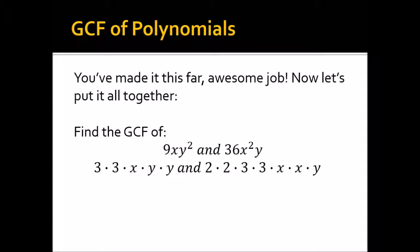I'm thinking they have a 3, they have an x, and a y. So, oh, and another 3. Sorry. So they have 3·3·x·y. And that gives us our GCF, which is 9xy.